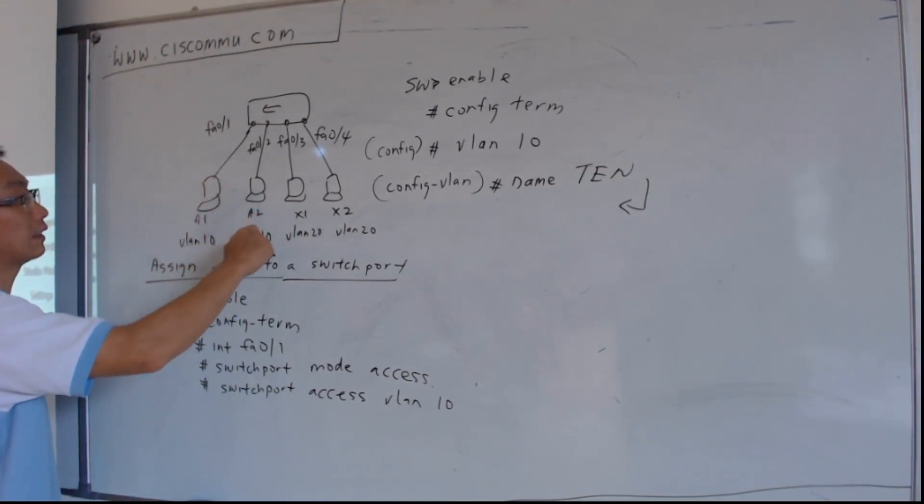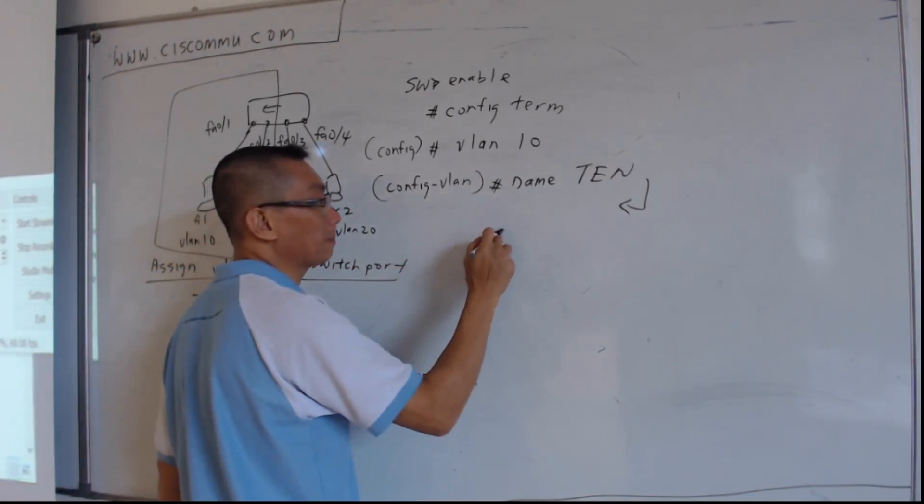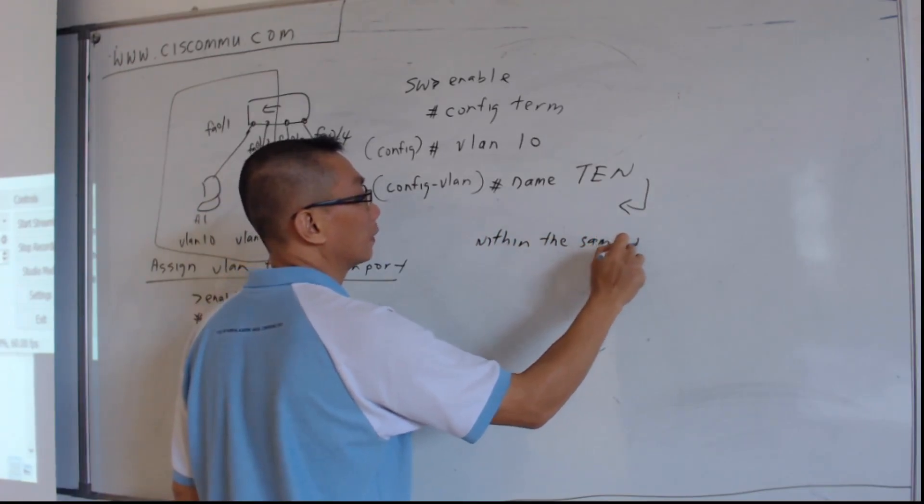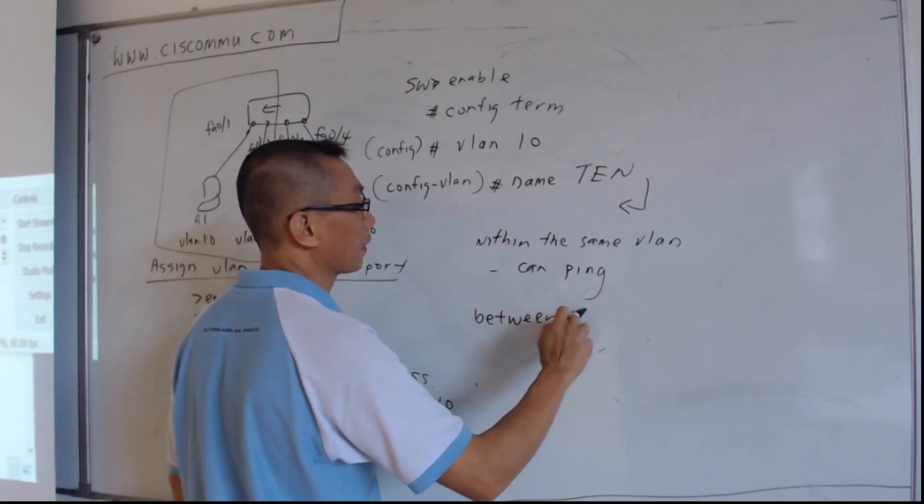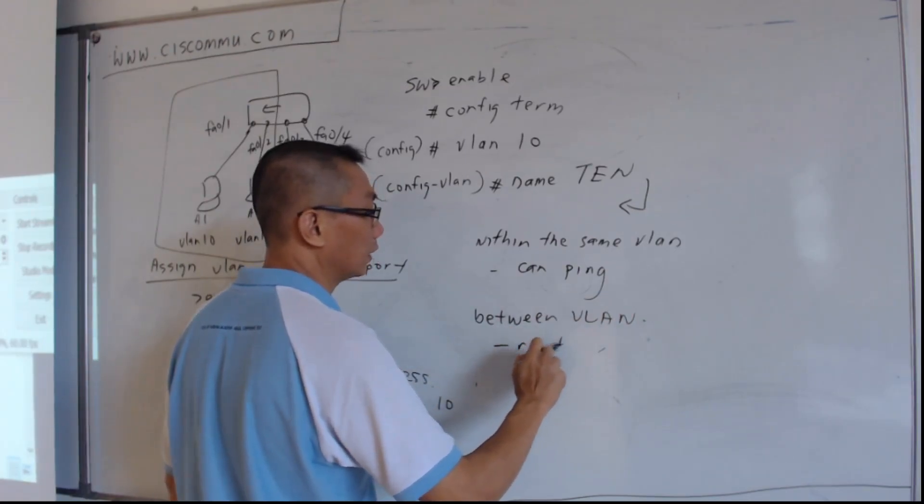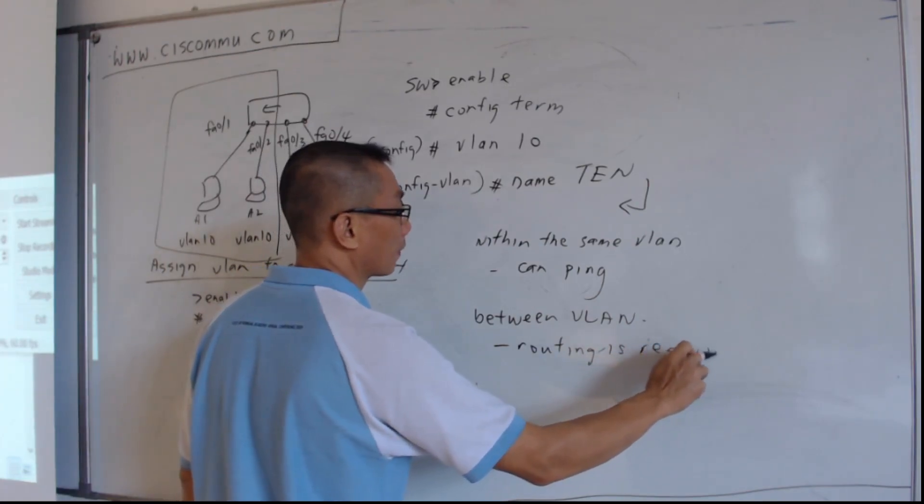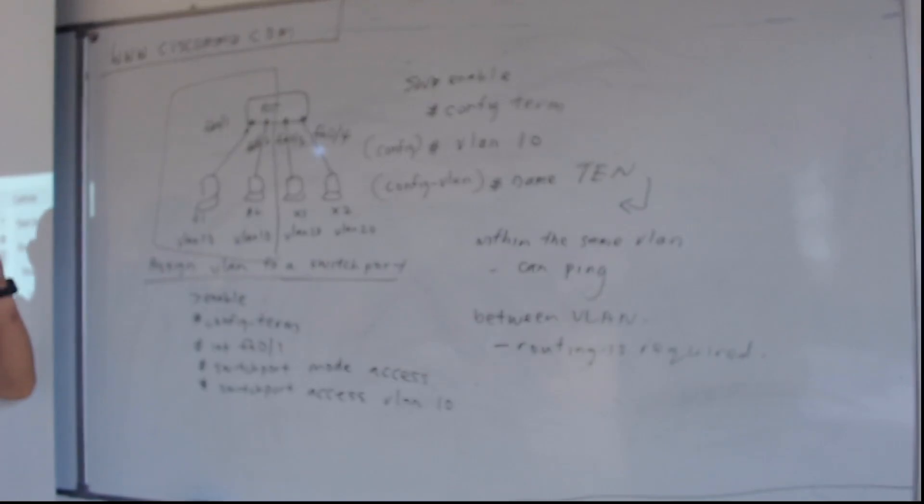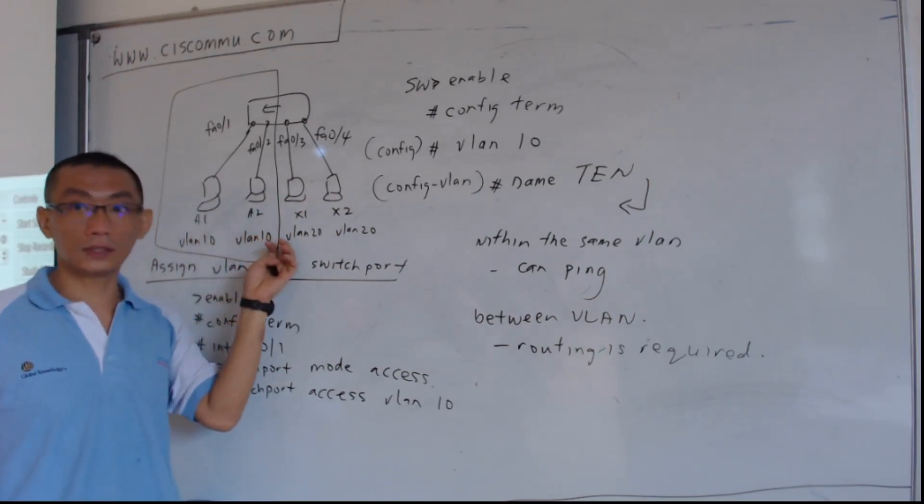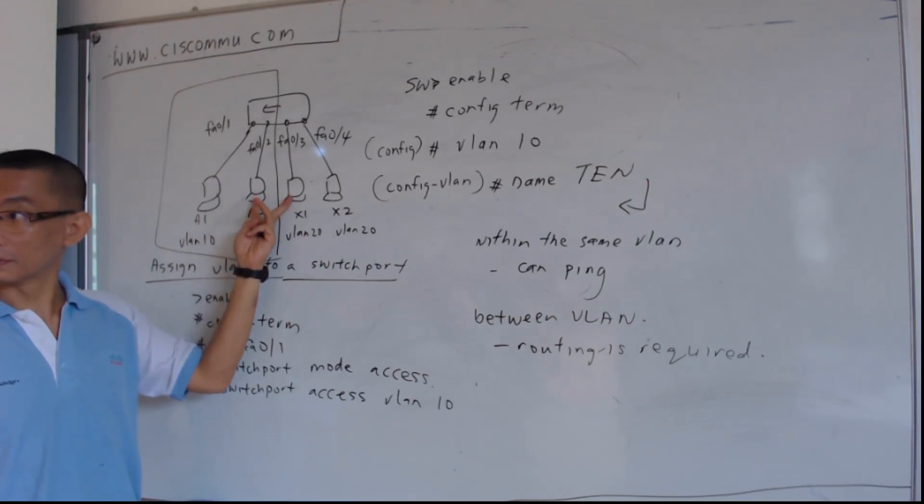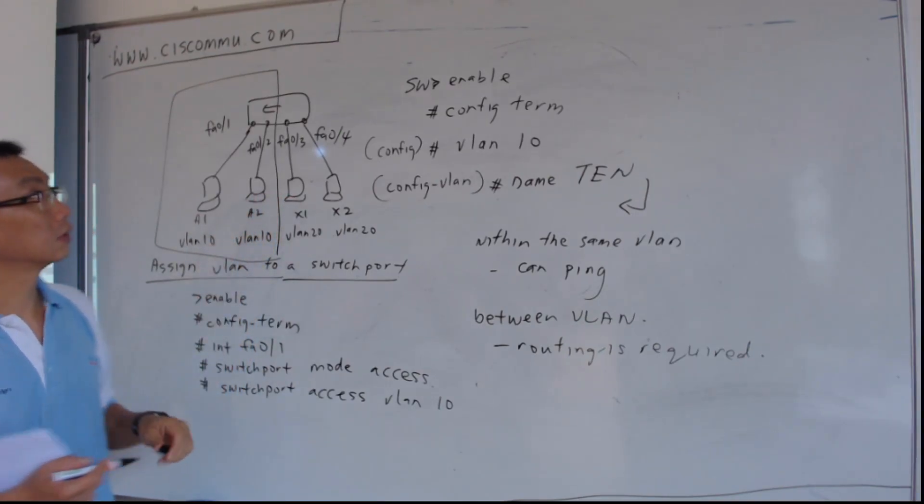Now what happens is that you already segment the switch into two parts. Only within the same VLANs can you ping. Between VLANs, routing is required. In this case, there's no router, so these two VLANs are isolated. Only these two PCs can ping each other. These two PCs can ping each other. The rest of the PCs cannot ping. Because they are in different VLANs. You want them to ping each other, you need routing. So that is LAN number one.